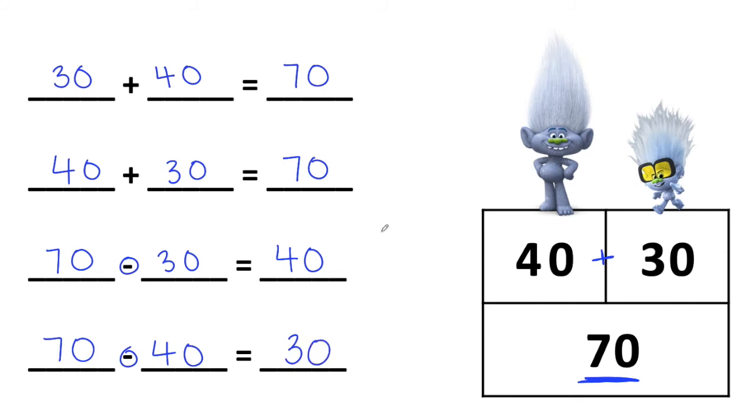So here's a fact family with tens. We still wrote two related addition facts and two related subtraction facts. And just like our fact families that we've been talking about, they share the same two parts, which are 40 and 30, and the same whole, which is 70.